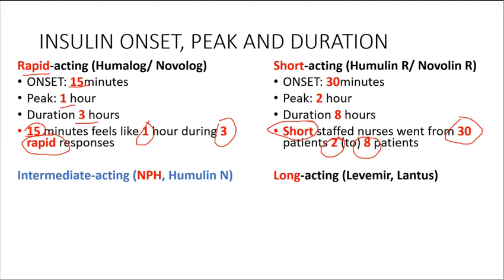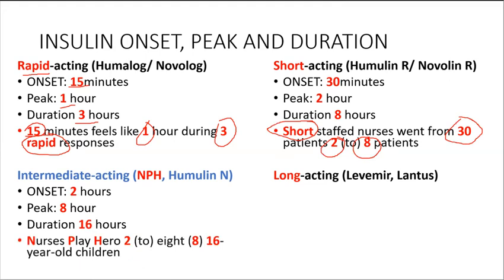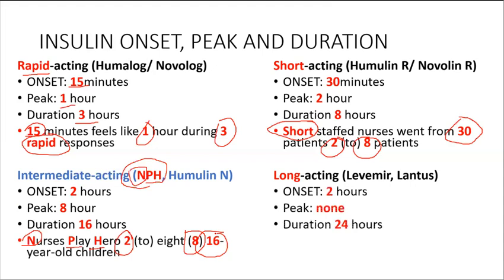For intermediate acting insulin — NPH and Humulin N — the onset is 2 hours, the peak is 8 hours, and the duration is 16 hours. To remember that, use the phrase: 'Nurses play hero to 8, 16-year-old children.' The N in Nurses and P in Play represent NPH; 2 is onset, 8 is peak, and 16 hours is duration.